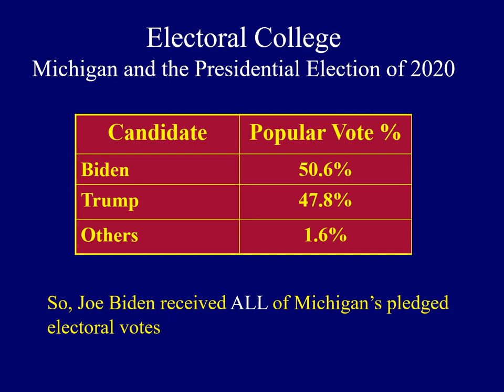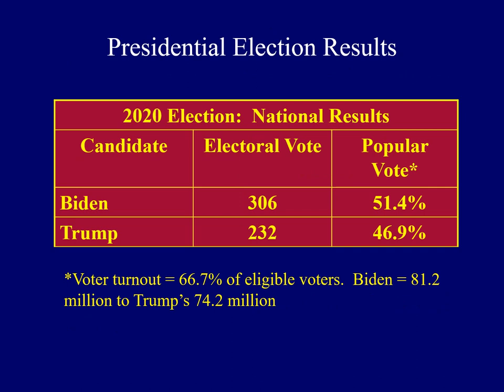What happened in Michigan in 2020? Based upon the popular vote, Joe Biden won the state with 50.6% of the popular vote — it was a pretty close election. As a result of the way the Electoral College works, Joe Biden received all of Michigan's pledged electoral votes. The national results from the 2020 election show that Joe Biden eventually won 306 electoral votes to President Trump's 232. Voter turnout in 2020 was very high, at about 66.7% of eligible voters actually voting.